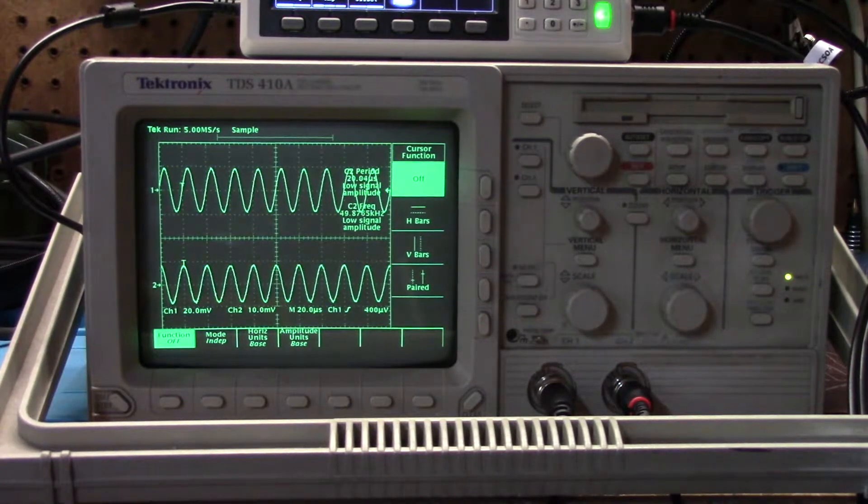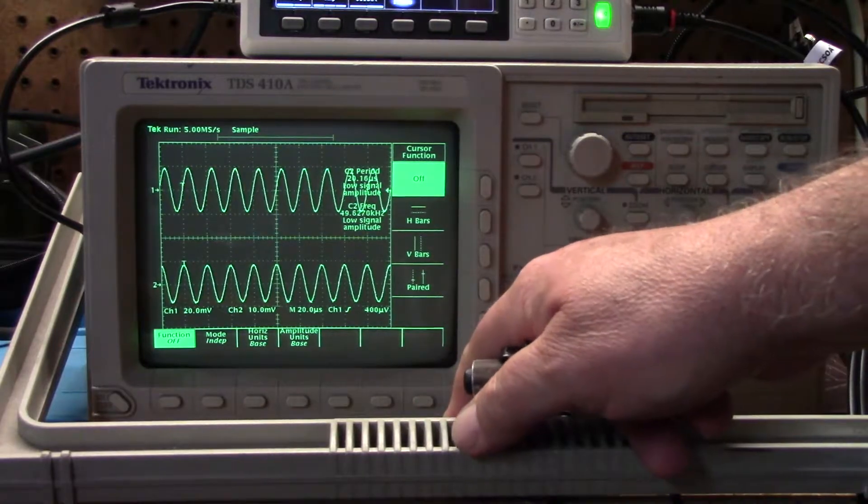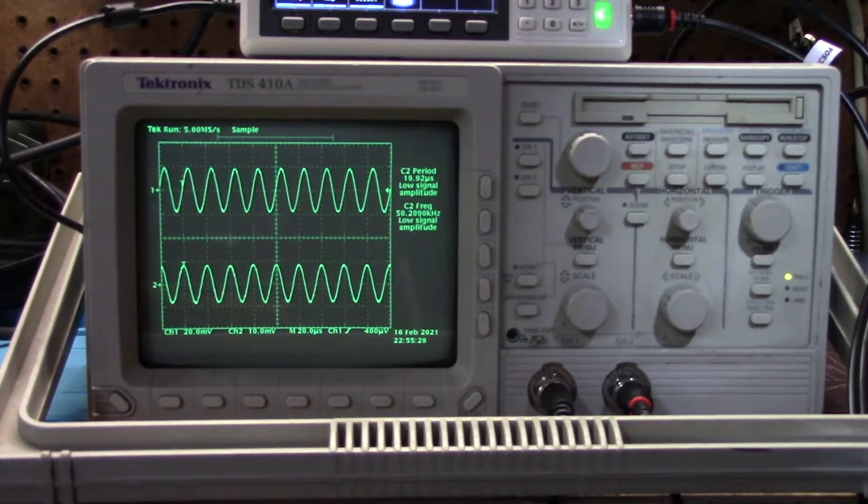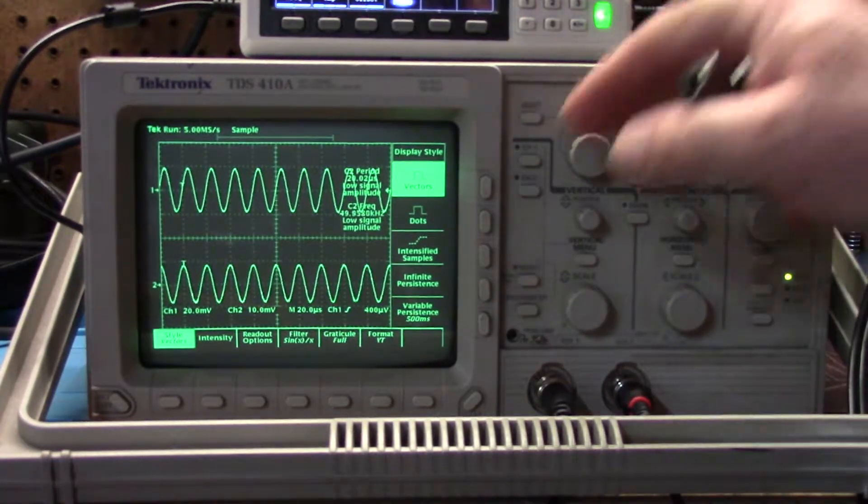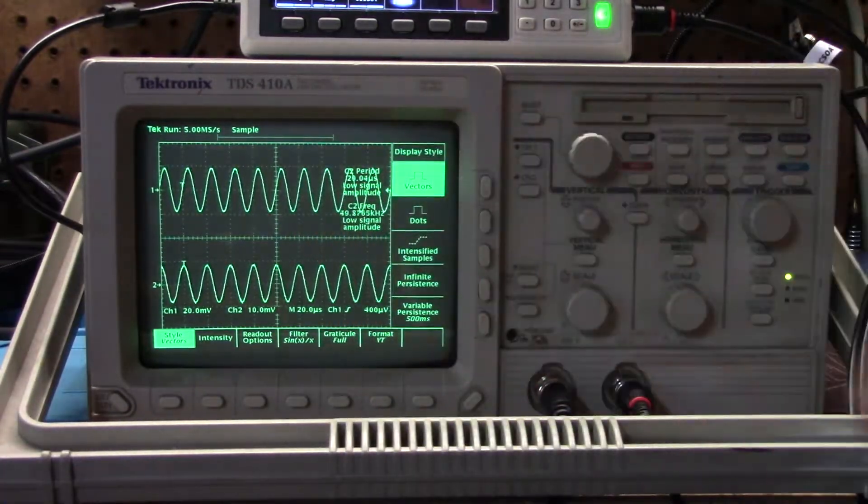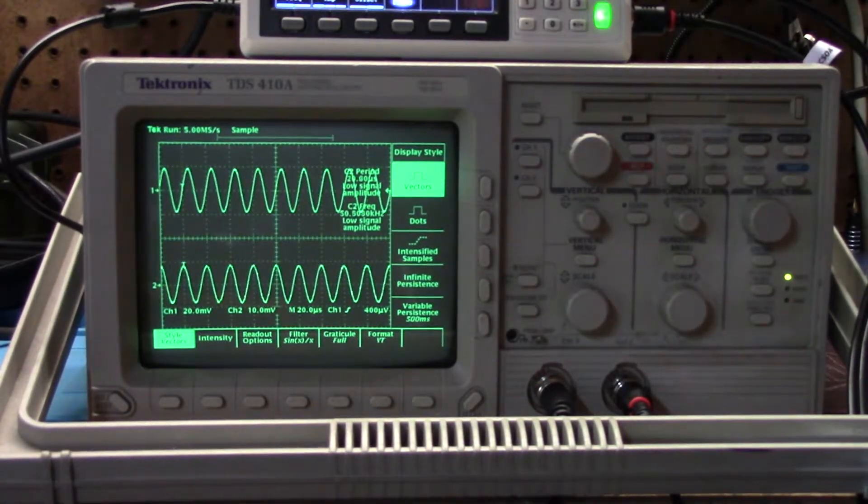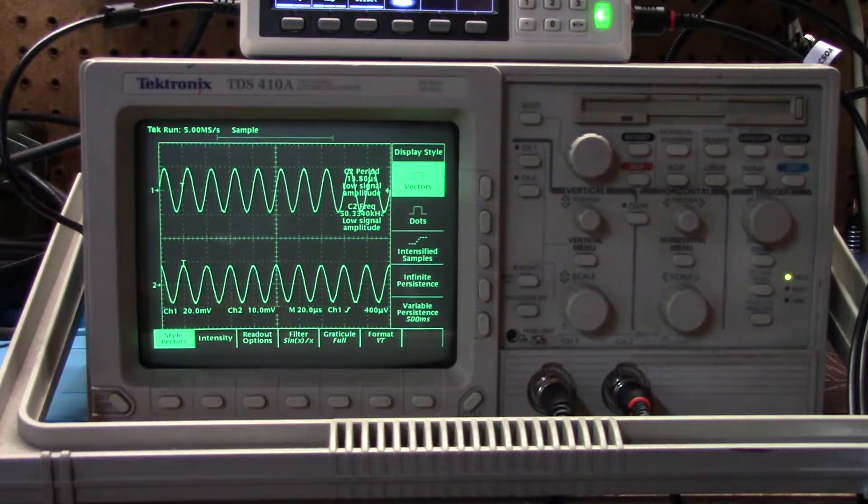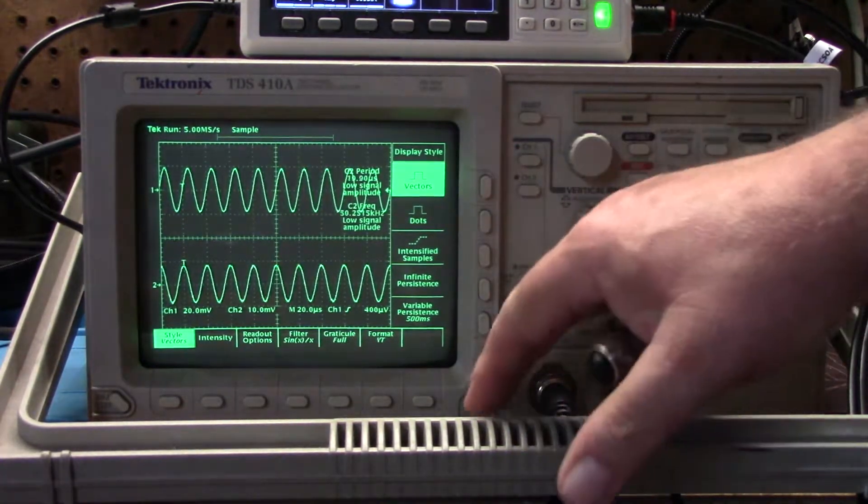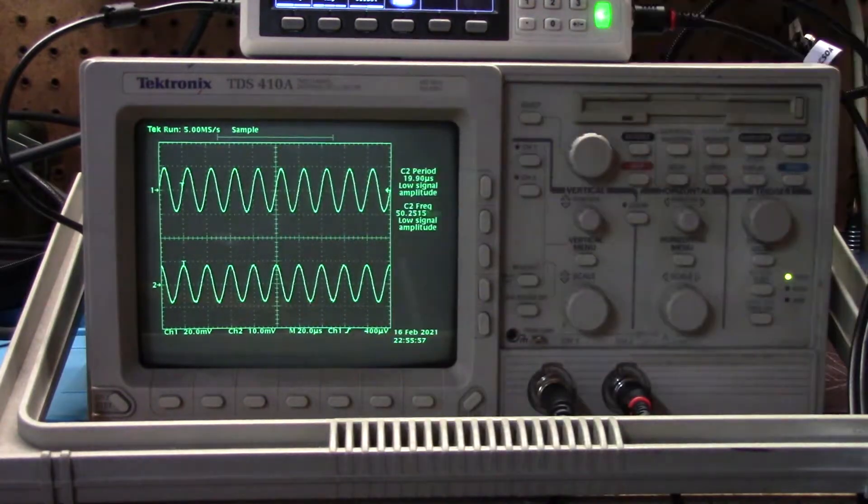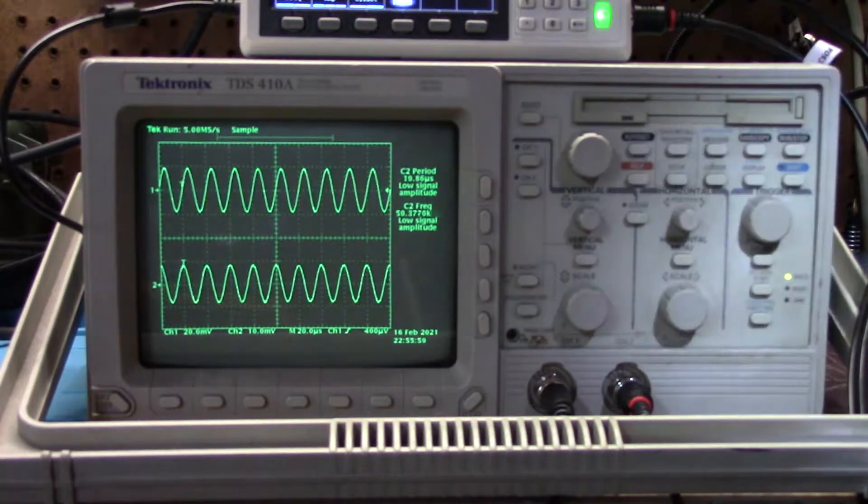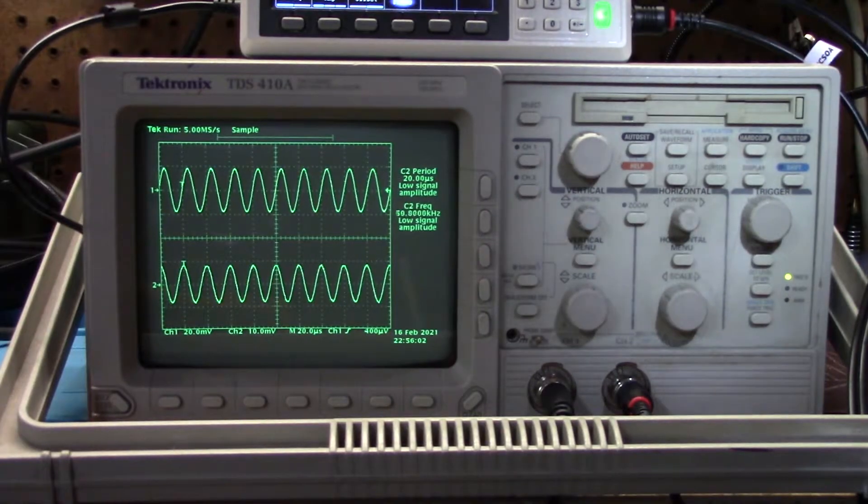Let me clear that off. We also have of course our utility menu. We can change some of the functions on how the screen looks, not the resolution but the style of the graph. Right now it's in vector mode. I can change the intensity and some other video related options and filtering. I've got it pretty much at the default like I like it. The signal is the brightest part and then the graticule is a little dimmer obviously.